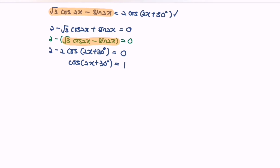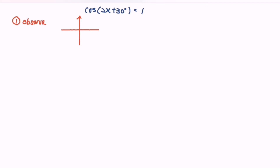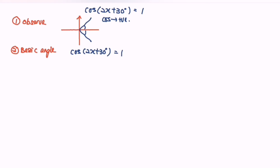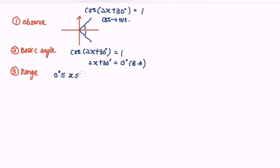Step 1: observe the situation. For cos(2x + 30°) = 1, cosine is positive, so it occurs in the first and fourth quadrants. The basic angle is 0°, since cos 0° = 1. Step 3: find the range. Given 0 to 2π, using degrees that's 0° to 360°. Based on the expression 2x + 30°, we transform the range.